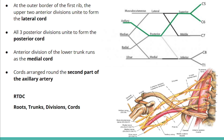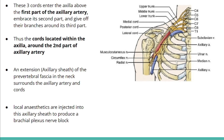The axillary artery can be divided into first, second, and third parts in relation to the pectoralis minor muscle. These three cords enter the axilla above the first part of the axillary artery, embrace the second part, and give off their branches around the third part. Therefore, the cords are located within the axilla around the second part of the axillary artery.